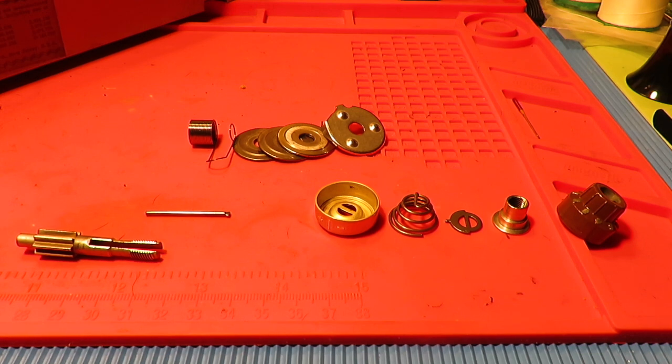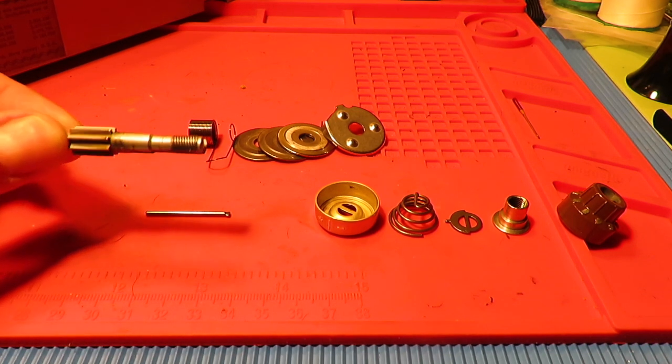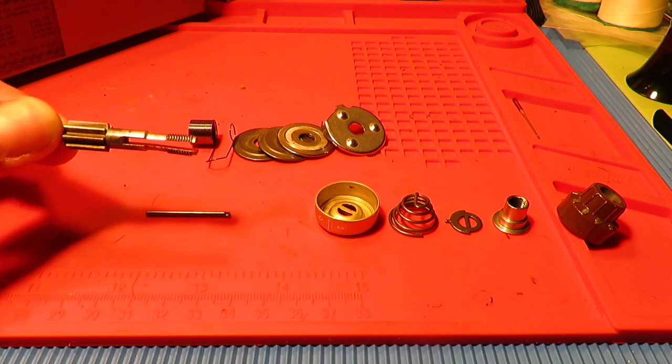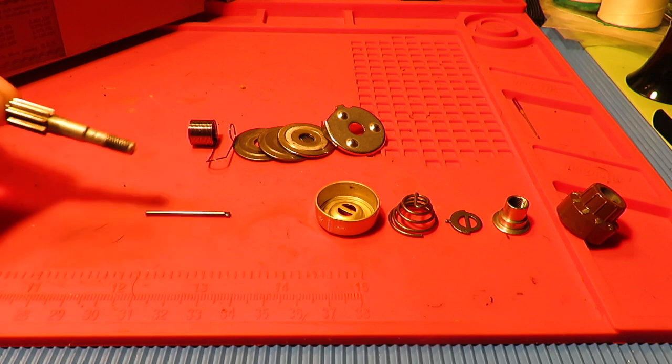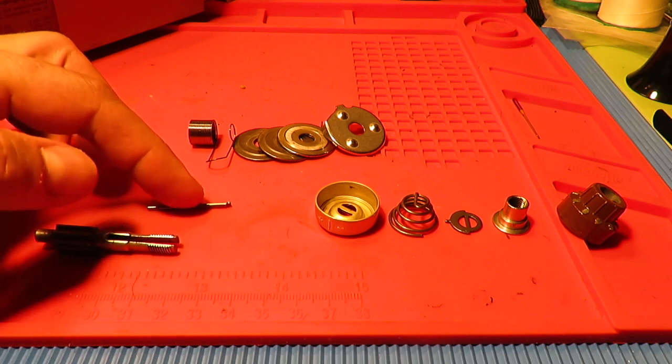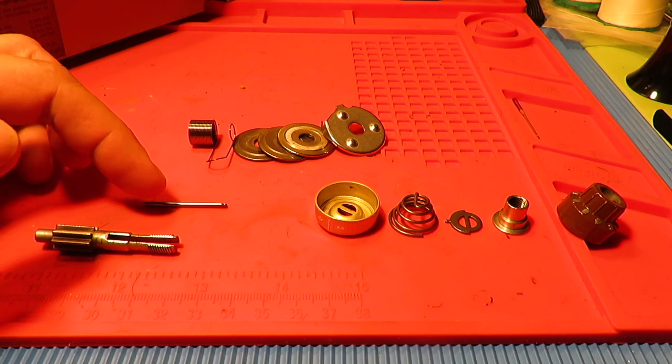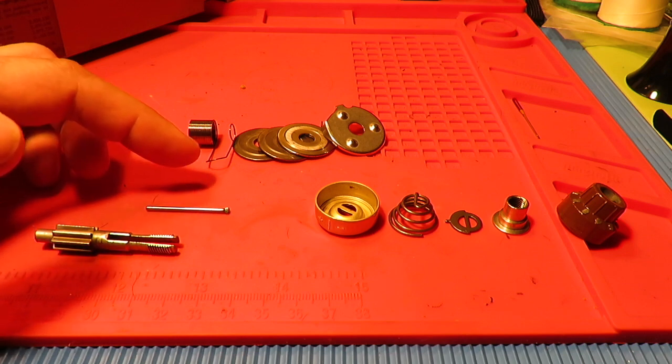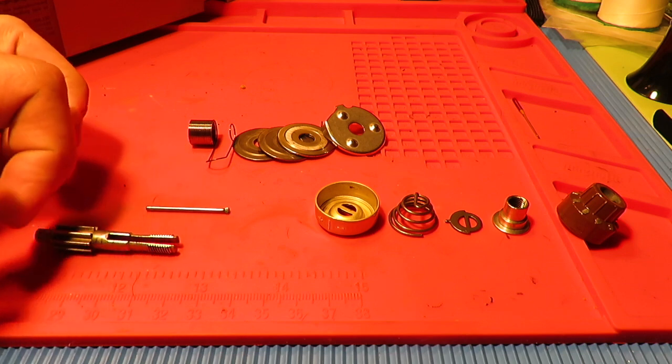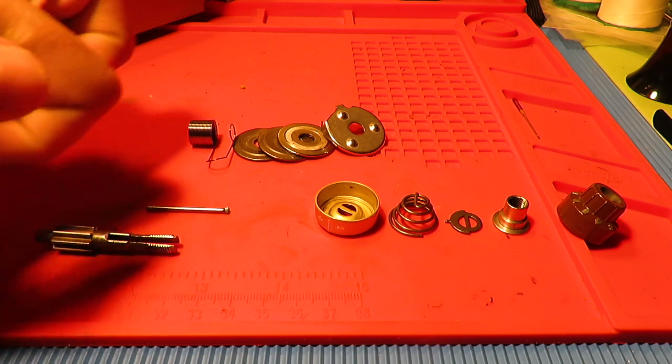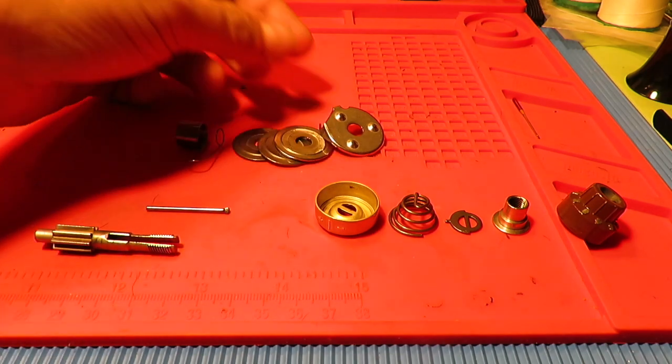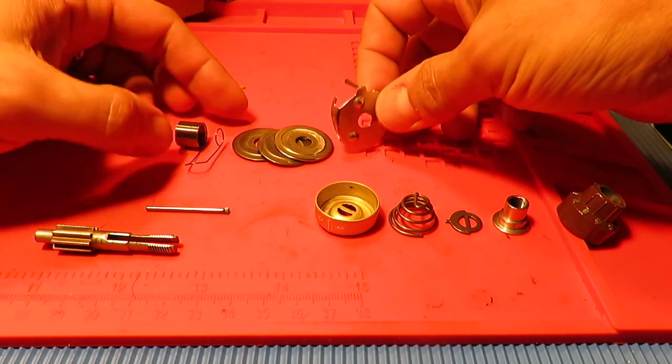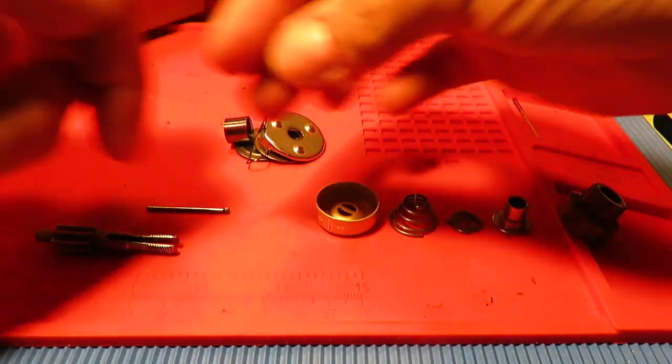Here is the needle thread tension unit fully disassembled. You have the stud, as it's referred to in the service manual, and that's the thing that holds everything and gets screwed into the machine. Into the stud gets placed the tension-releasing pin, which fits into a channel that goes through the stud and pokes into the machine. Then you have your take-up spring, the tension discs, and the thread guard, which go together as a package and slide onto the stud.